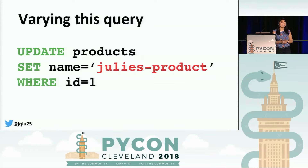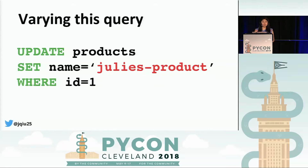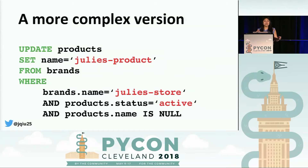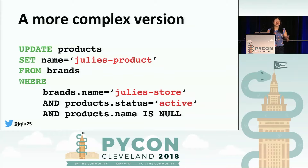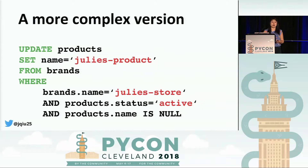For example, what if the marketing team didn't give me a product ID? What if instead they said: can you change the names of all products in our system that belong to the brand Julie's Store, and if these products are active and don't currently have a name, rename them to Julie's product? We can see how queries can become pretty complex really quickly, and we want a better system than just raw SQL. So let's talk about our next strategy.